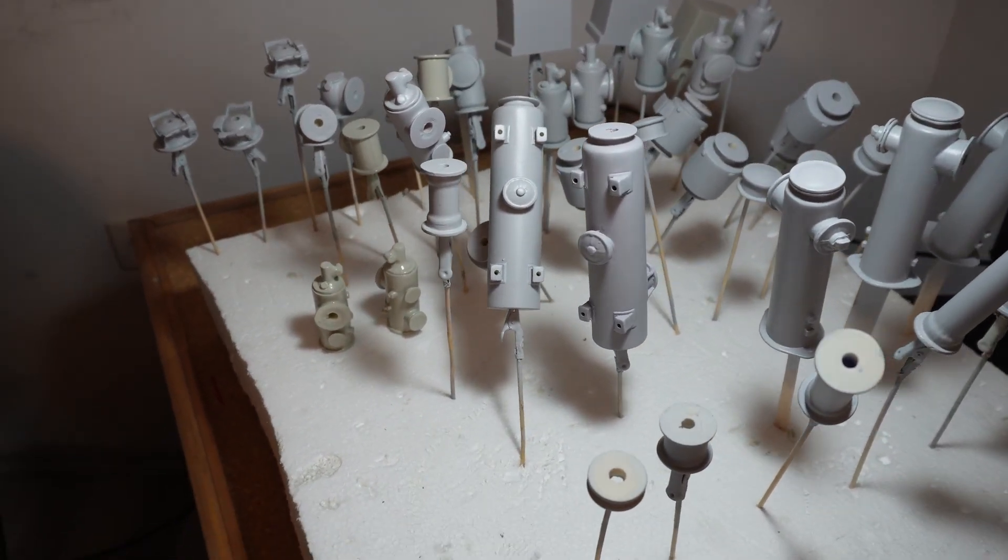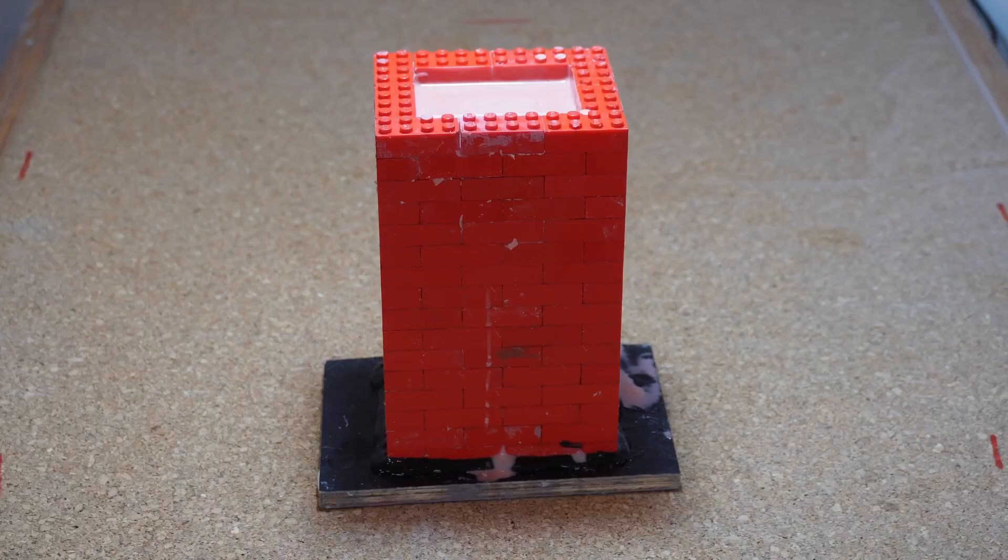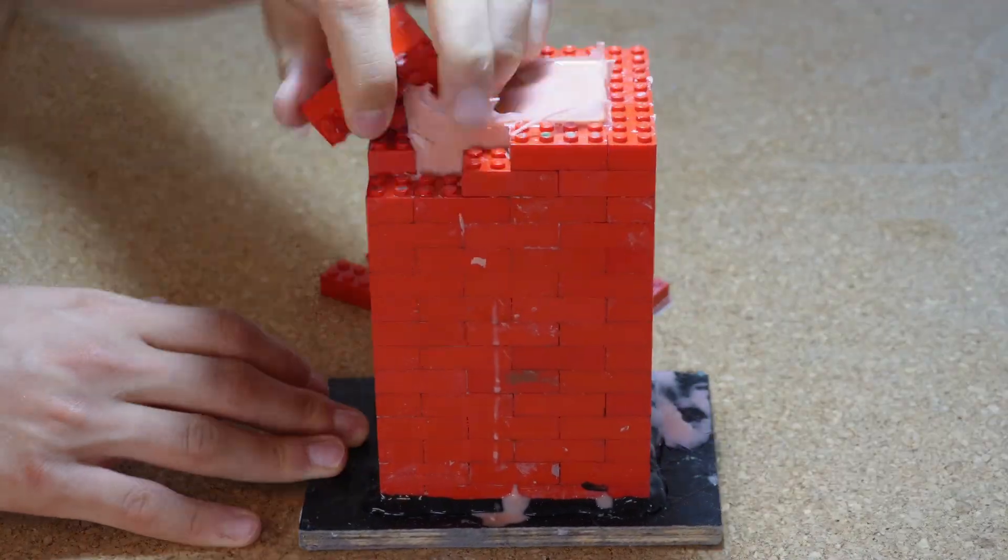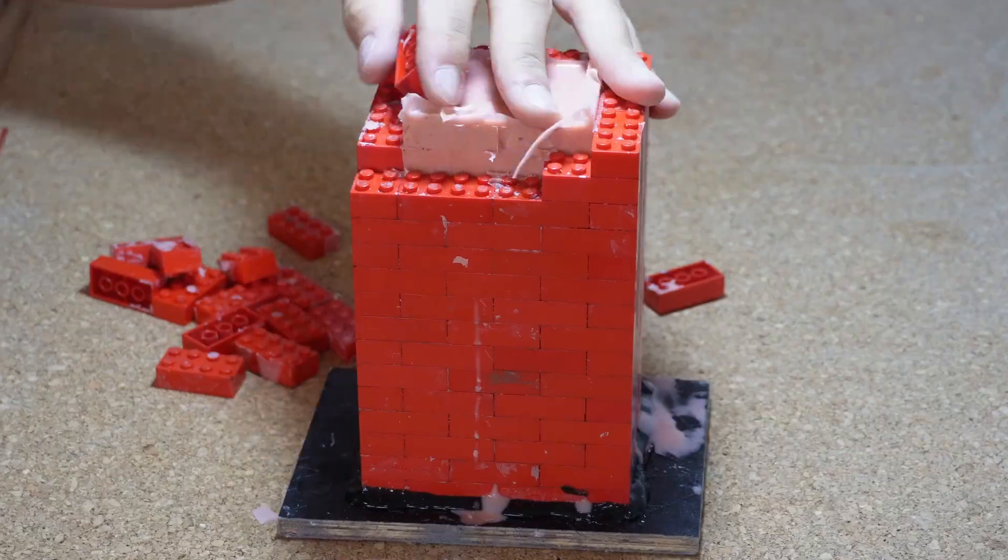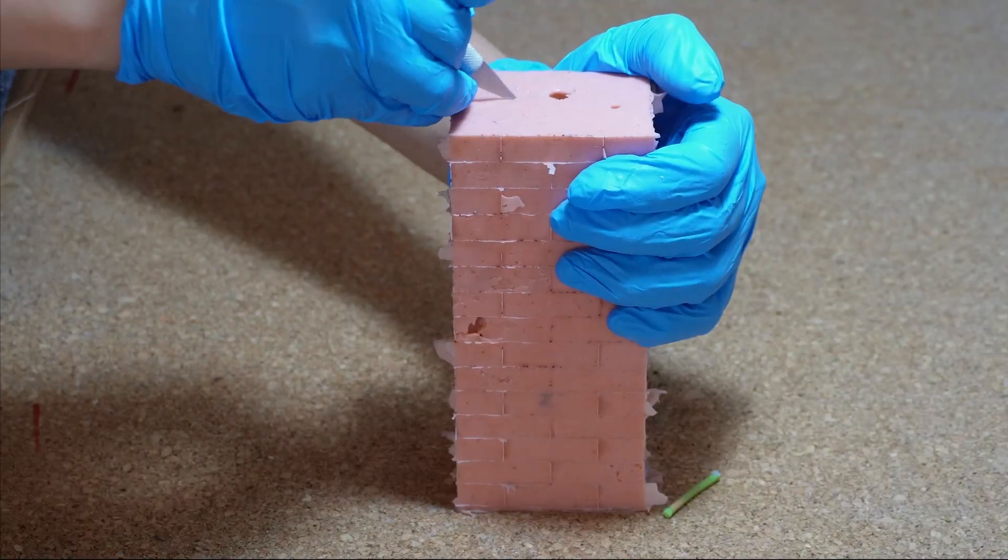With the masters complete, we move into silicone casting. Since the parts are small, we use Lego blocks to build custom mold boxes. It's a simple and effective way to contain the silicone without wasting material.